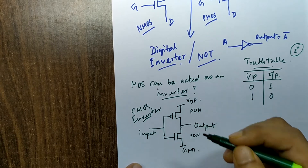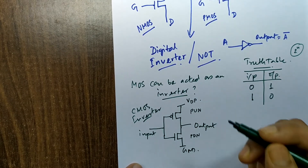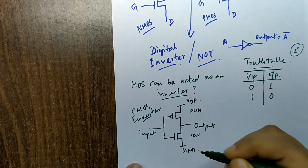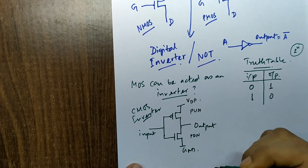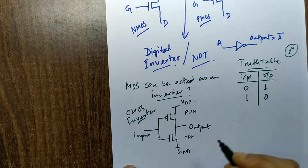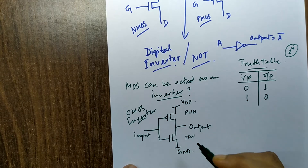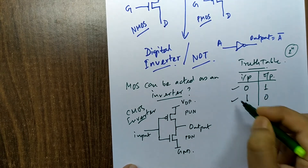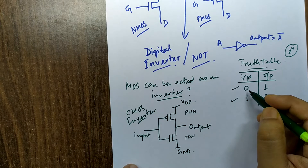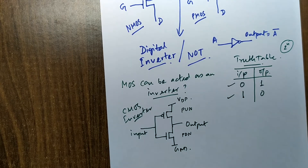PMOS can easily drive logic 1 very easily due to its inherent nature, and NMOS can easily pass logic 0. So PMOS is the pull-up transistor and NMOS is the pull-down transistor. Now for this inverter, let's consider Case 1 where the input logic is 0.